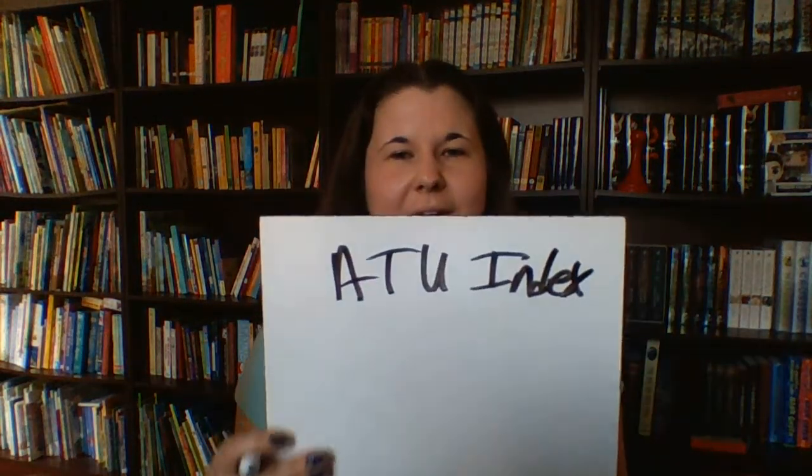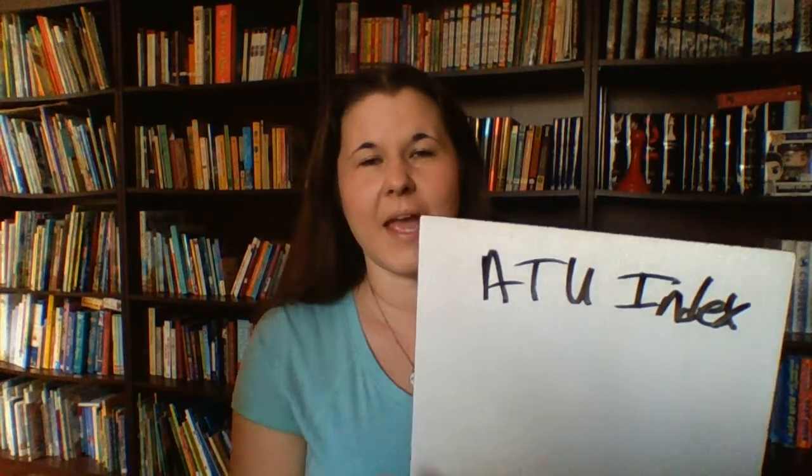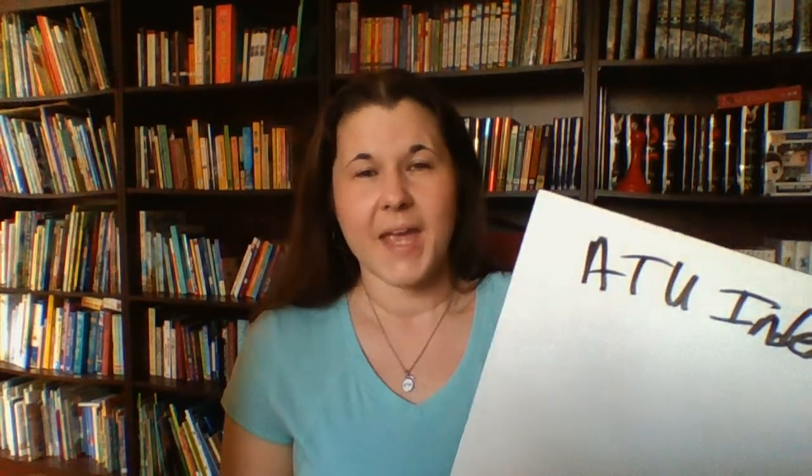I wanted to talk about the ATU index. I have a little board here in case you are a visual person. ATU stands for the last names of the men who developed it: Arne, Thompson, and Uther. The first guy — Arne — he sort of developed this categorization of all of the folk tradition.